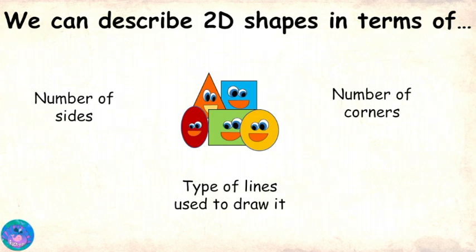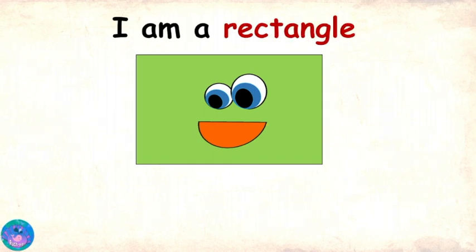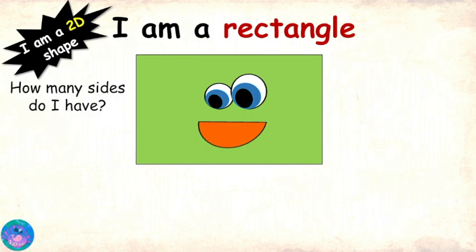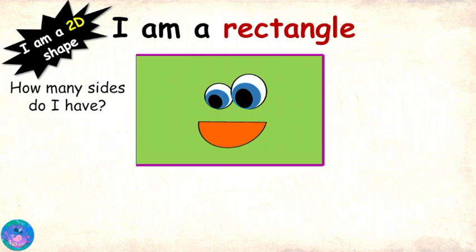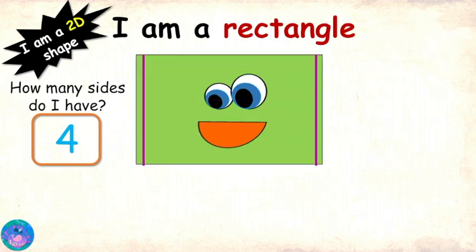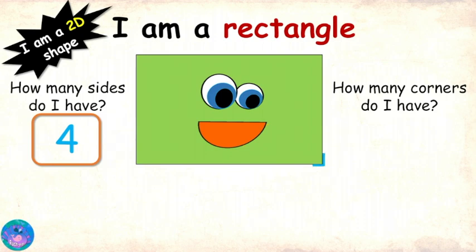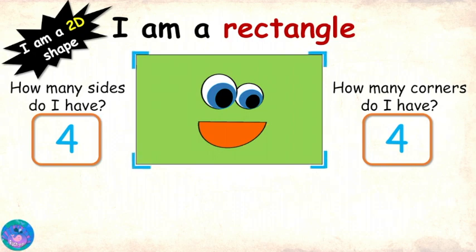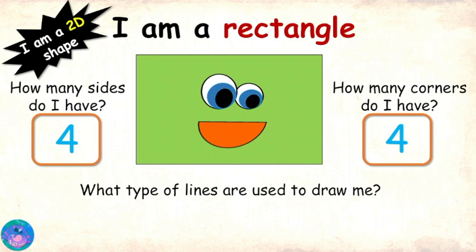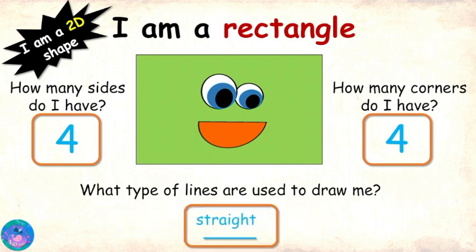I can see the first one coming. Hello there. I am a rectangle. I'm a 2D shape. How many sides do I have? 1, 2, 3, 4. And it looks like your opposite sides are of the same size. That is right. How many corners do I have? 1, 2, 3, and 4. And I can see that you have L-shaped corners. Right again. What type of lines do I use to draw me? Straight or curved? Straight lines! Excellent! So Zoe, now you know me well.